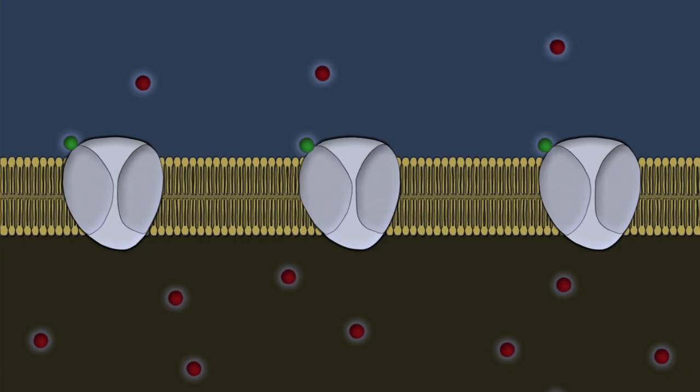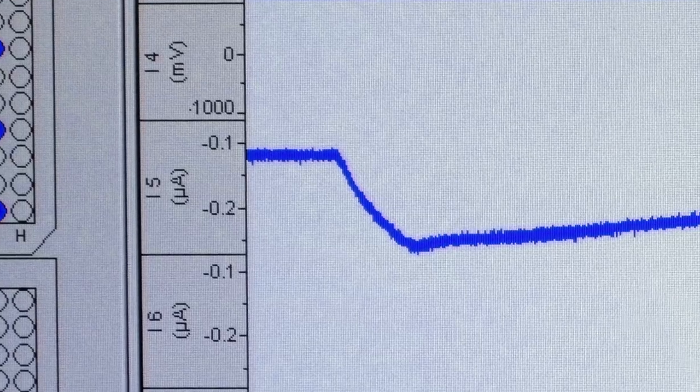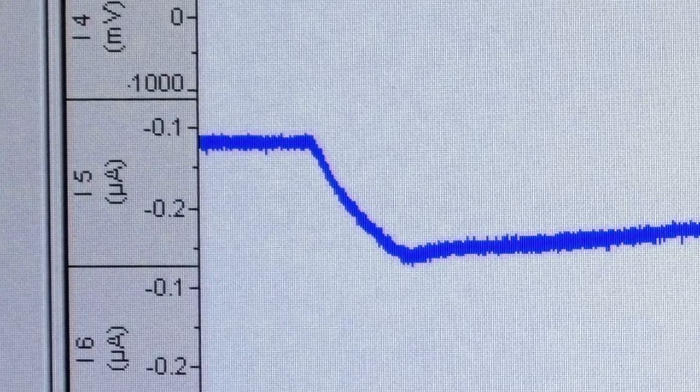When the receptor is activated, that potential across the membrane changes and you can see that as a dip in the steady state level that is maintained in the absence of an activation.